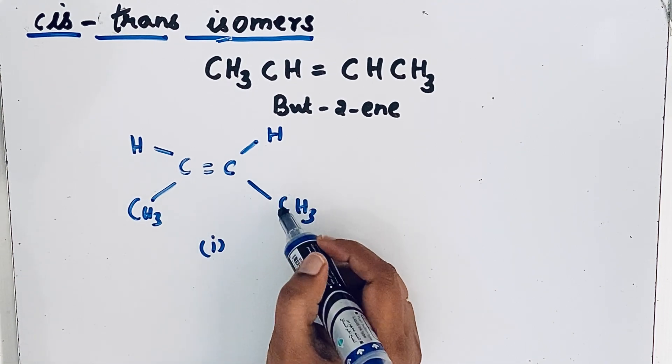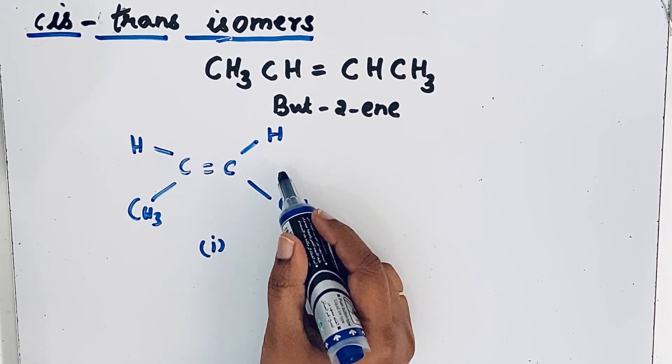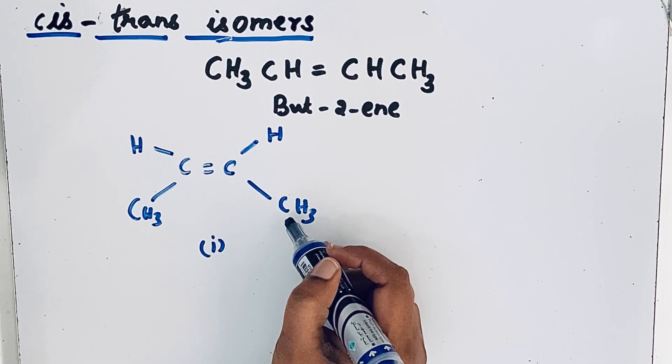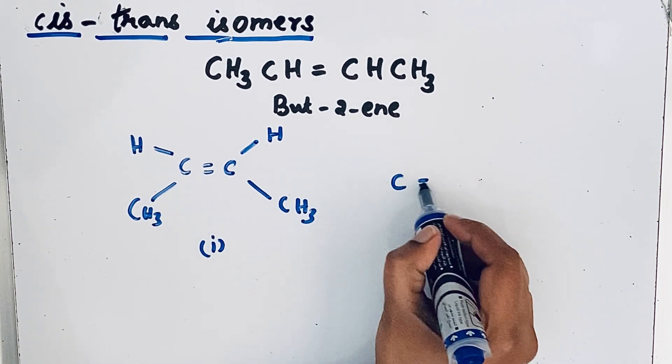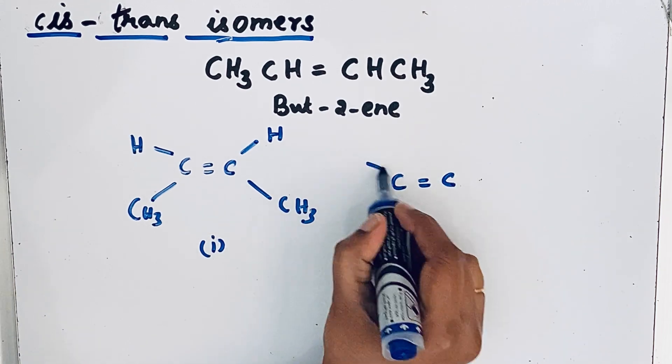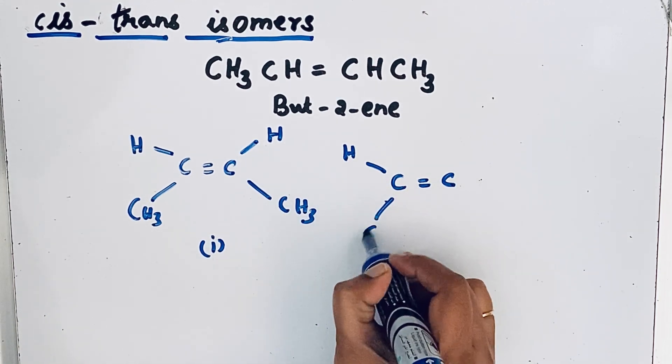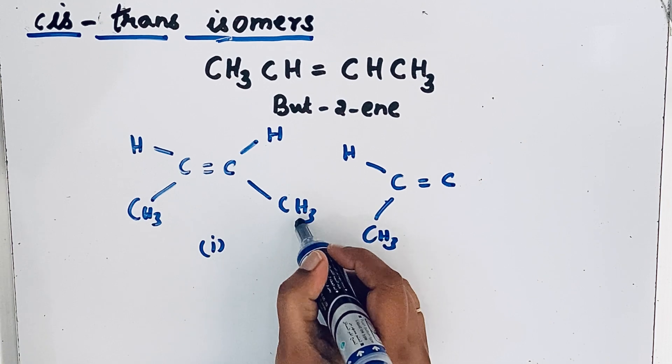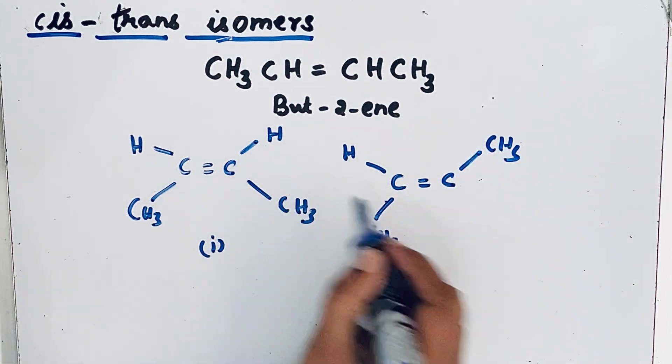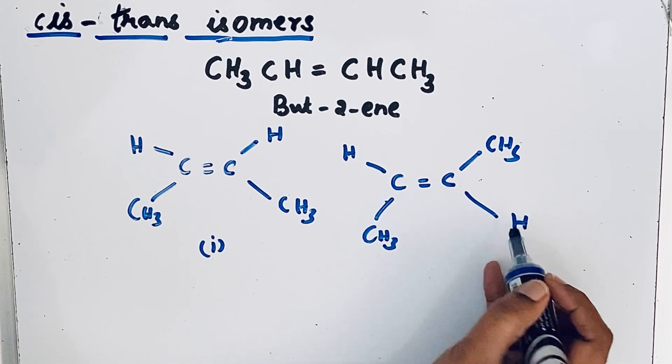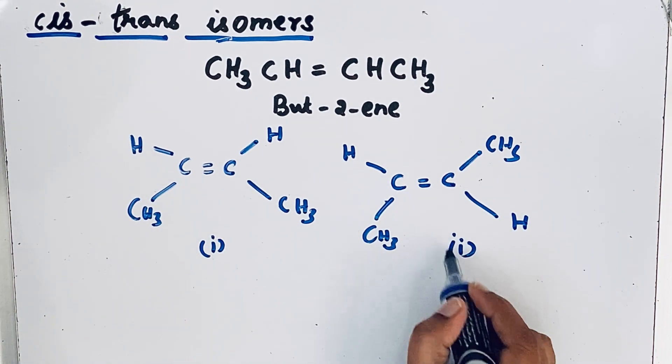In geometrical isomers there is the possibility of different arrangement of atoms and groups. C double bond C and then H, CH3 and this methyl group is going upwards and then hydrogen here. So this is structure two.